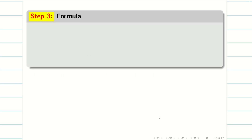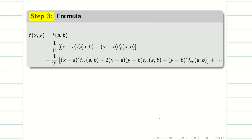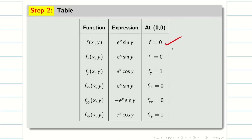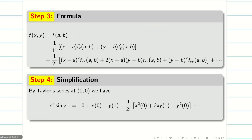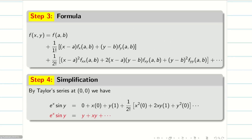Step 3: write the Taylor series formula. From the table, f, fx, fxx, and fyy are all 0 at (0,0). The remaining nonzero terms are fy = 1 and fxy = 1. Substituting into the formula and simplifying, we get e^x sin y = y + xy + dot dot dot. This expresses e^x sin y as an infinite series.